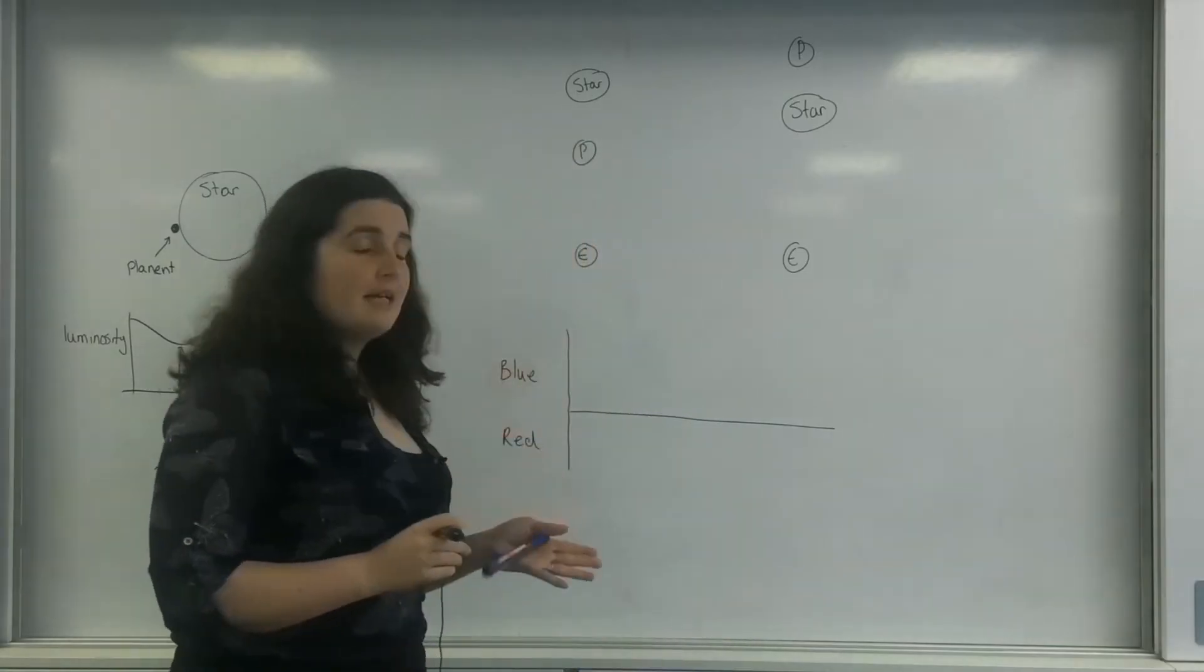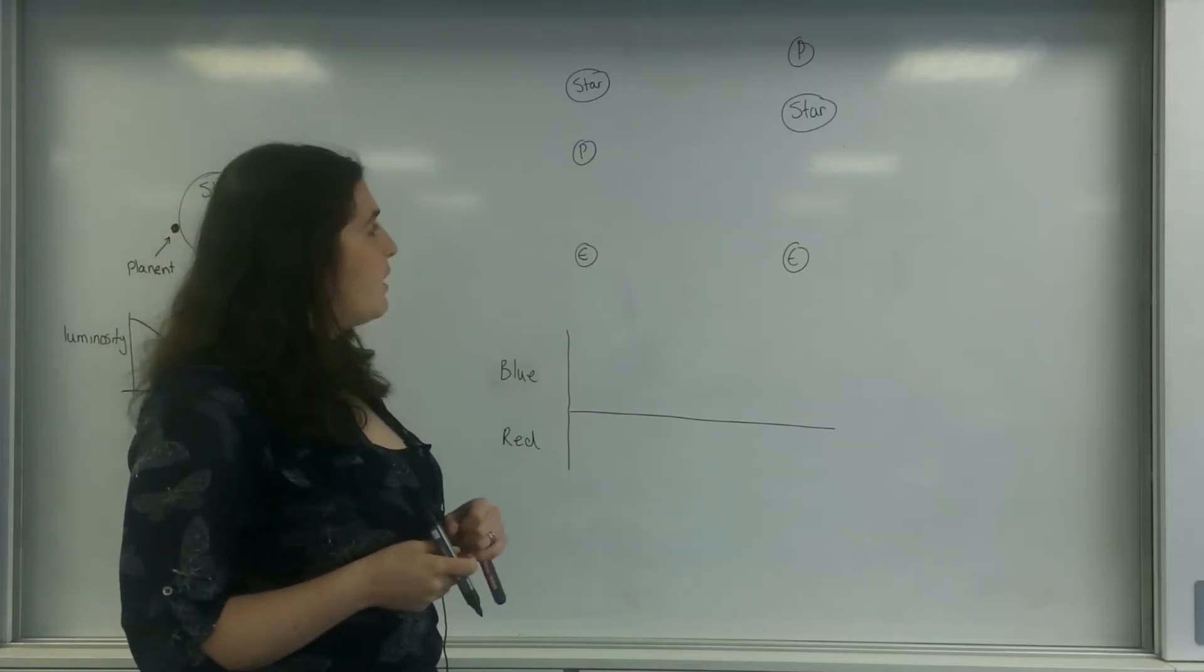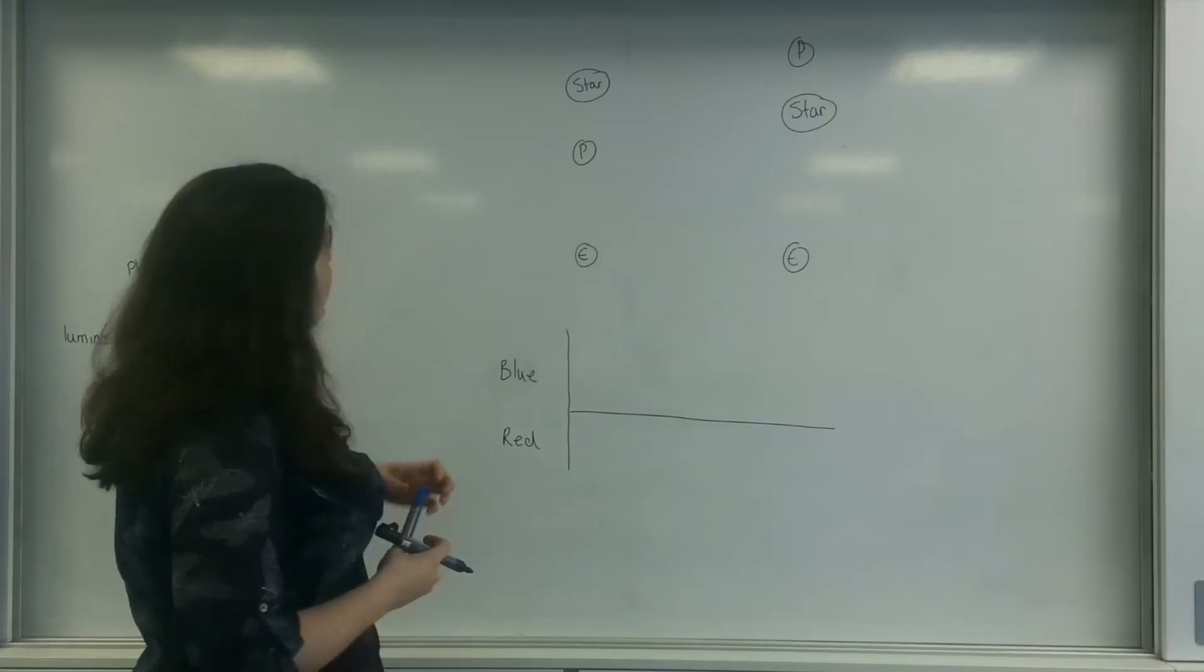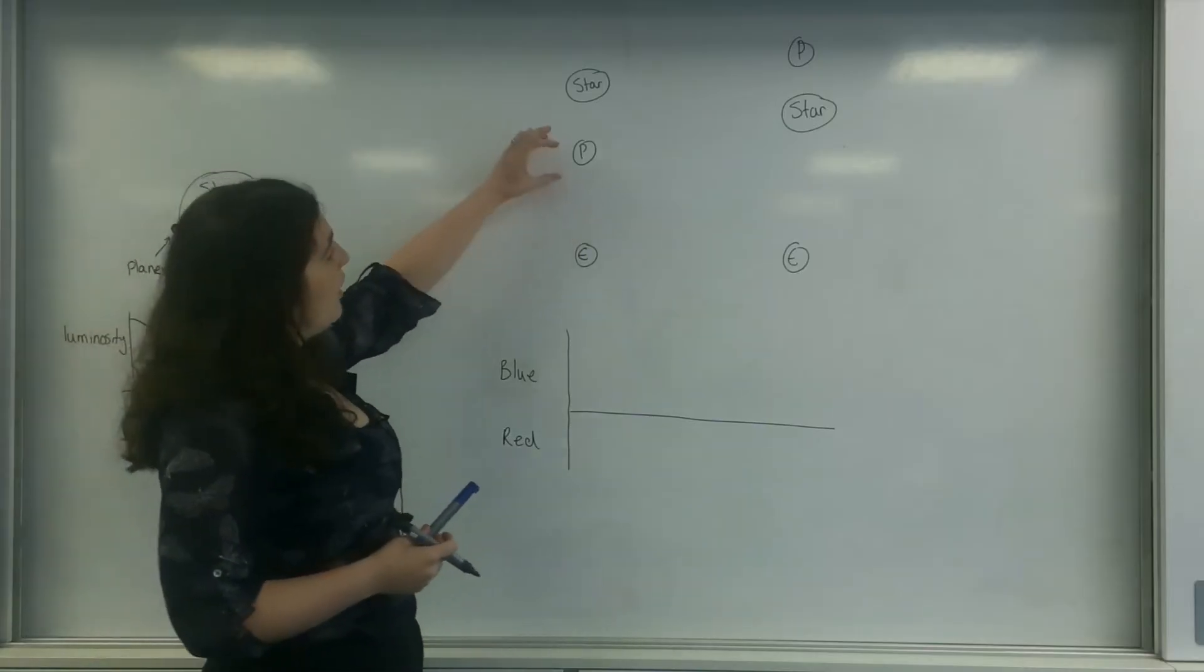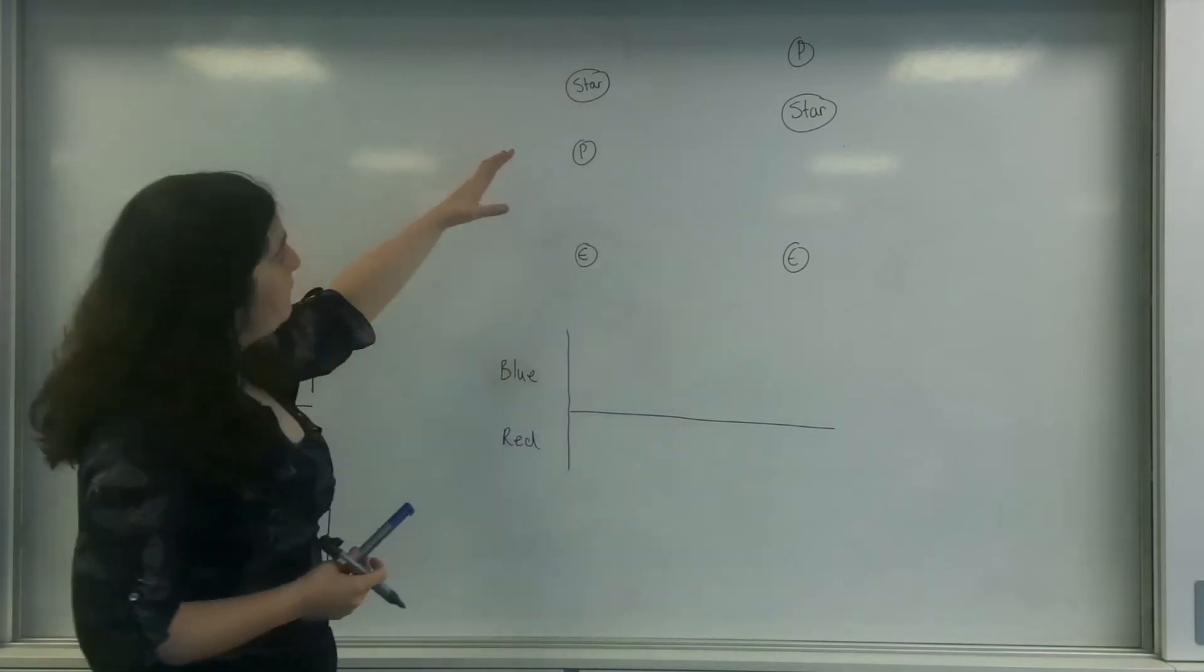Now the other one is a slightly different technique and we can use it for objects being pulled towards us, especially bigger stars. So what I've got here is Earth, this planet, and a star.